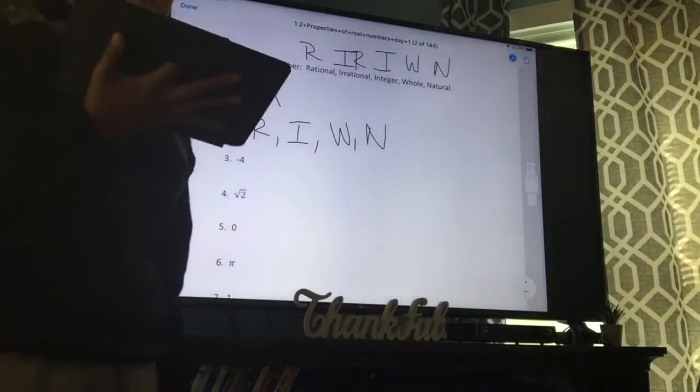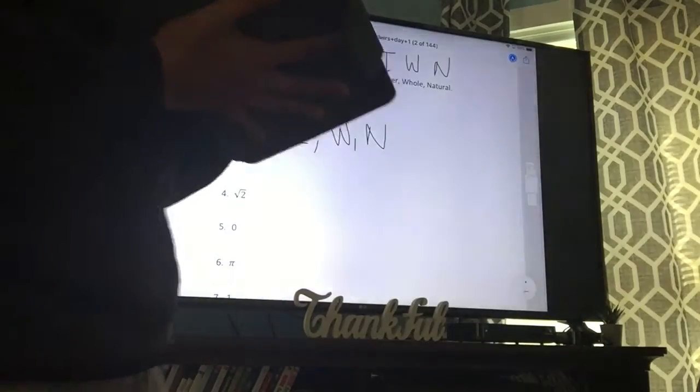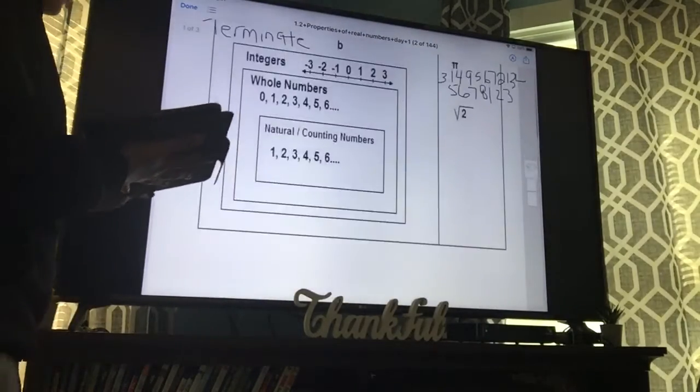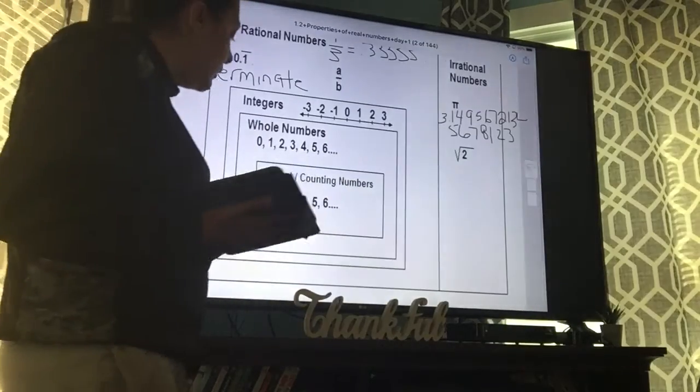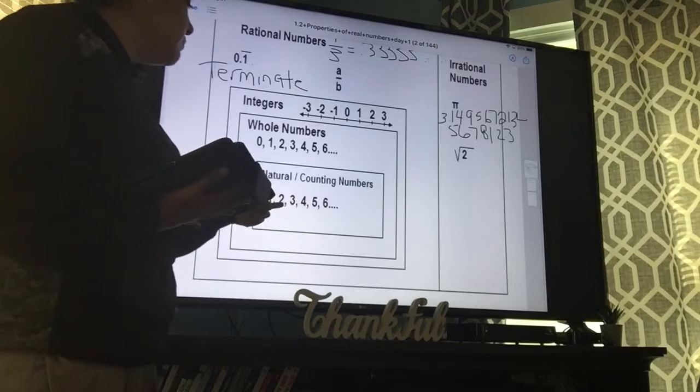So number four should look like R-I-W-N, okay? Negative four. Same thing, go back to your chart. Does it fall in here? It doesn't fall within naturals because these are only positives, no zero.